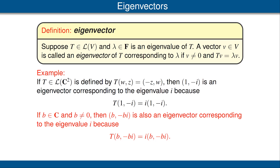When we have an eigenvector, then any non-zero scalar multiple of it is also an eigenvector corresponding to the same eigenvalue. For instance, if b is a non-zero complex number and we multiply both sides of T(1, -i) = i(1, -i), we see that T(b, -bi) = i times (b, -bi). Thus (b, -bi) is also an eigenvector corresponding to eigenvalue i. This always happens by linearity.